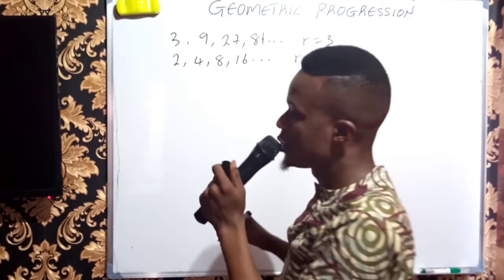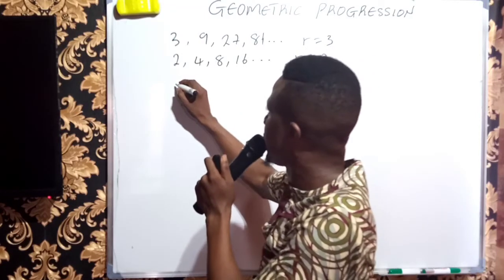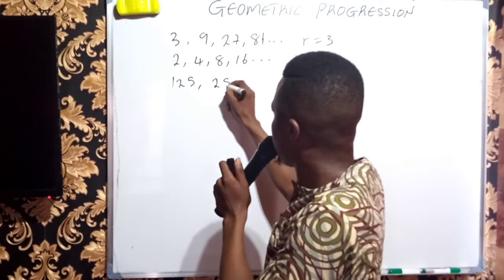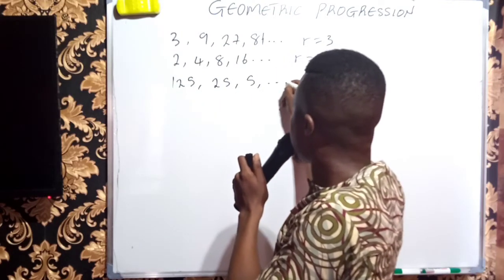Now sometimes, you can have a geometric progression that looks like, let's say, 125, 25, 5, etc.